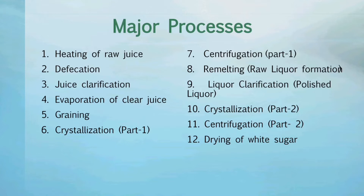The major processes are: 1. Heating of raw juice. 2. Defecation. 3. Juice clarification. 4. Evaporation of clear juice. 5. Graining. 6. Crystallization part 1. 7. Centrifugation part 1.